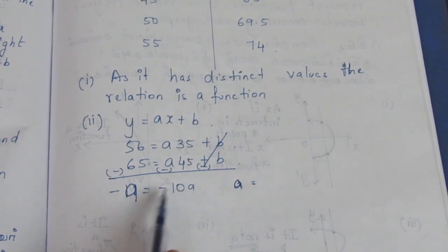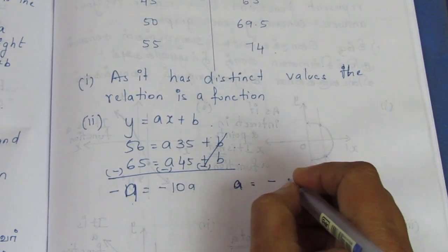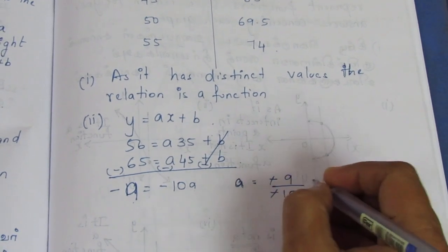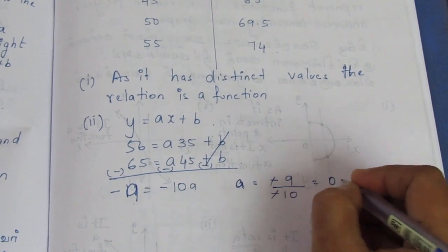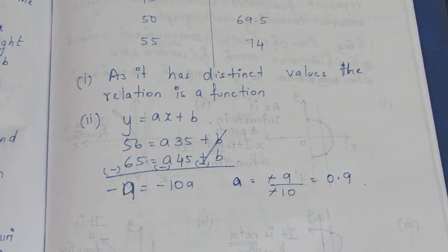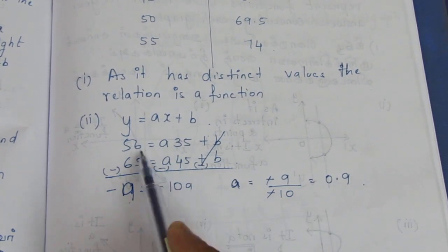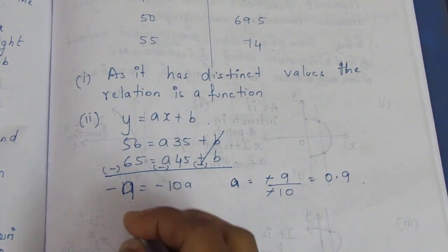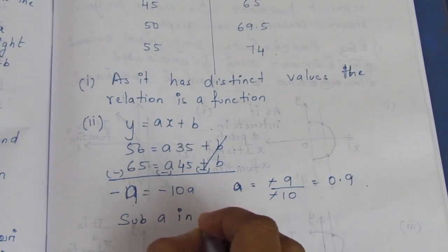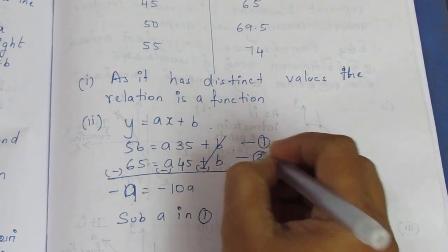So dividing: 9 divided by 10. Minus minus cancels, giving 0.9. So a is equal to 0.9. This is our first result. Now substitute a back into equation 1.